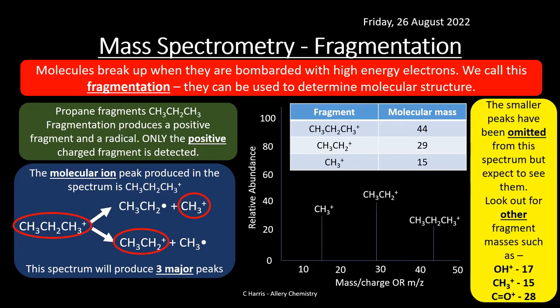Some smaller peaks may be omitted, but look out for tell-tale fragment masses: a peak at 17 suggests OH⁺, indicating an alcohol; a peak at 15 indicates a CH₃ fragment; and a peak at 28 suggests a carbonyl fragment. These common fragment masses can help you narrow down what molecule you have.